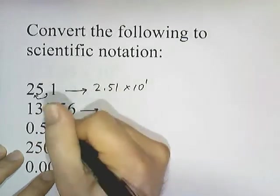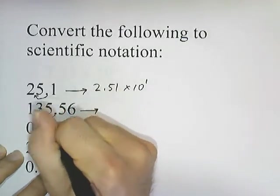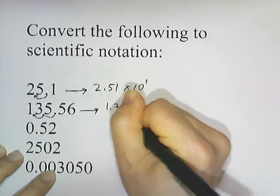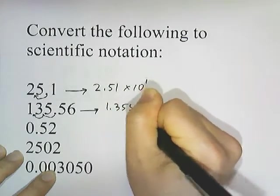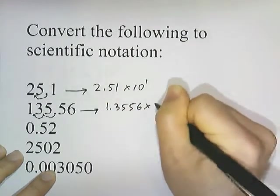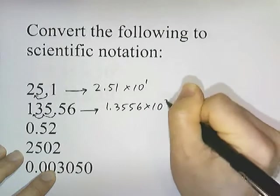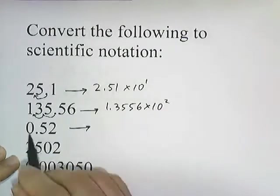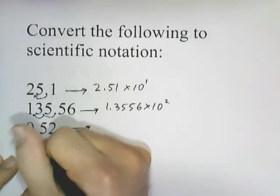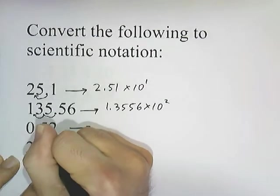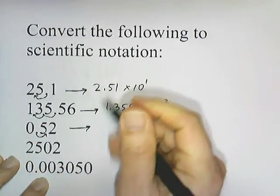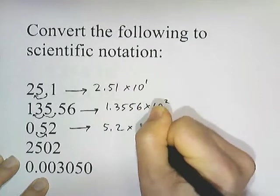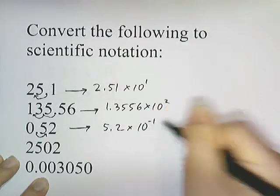135.56 — I'd have to move this one two places over, so this is going to be 1.3556 times 10 to the 2. And then 0.52 in scientific notation — I'm going to have to move this one one space over to the right — 5.2 times 10 to the negative 1.